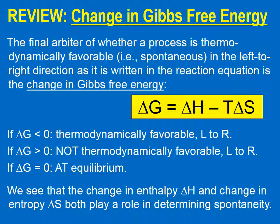Delta G is equal to delta H minus T delta S. If delta G is less than zero, thermodynamically favorable, left-to-right.